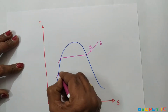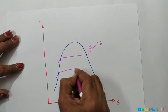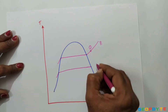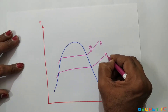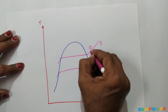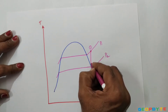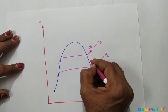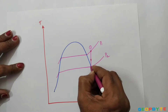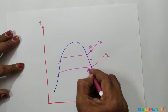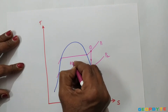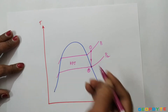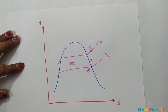While the steam is expanding in the high pressure turbine, the pressure of the steam is dropping from P1 to P2. This is the isentropic expansion process in the high pressure turbine.